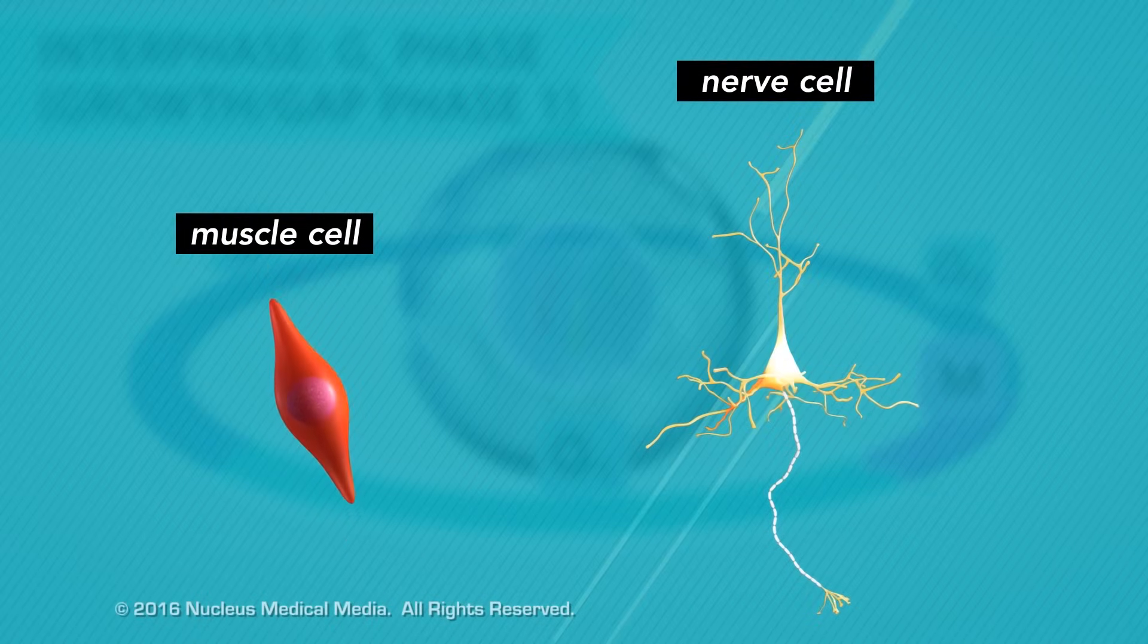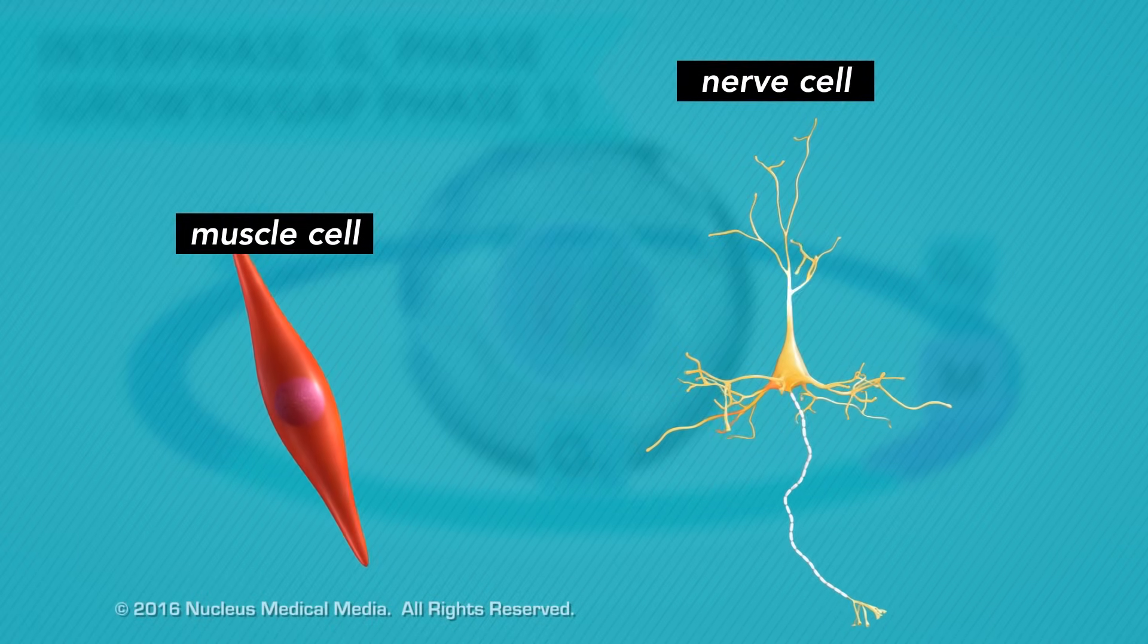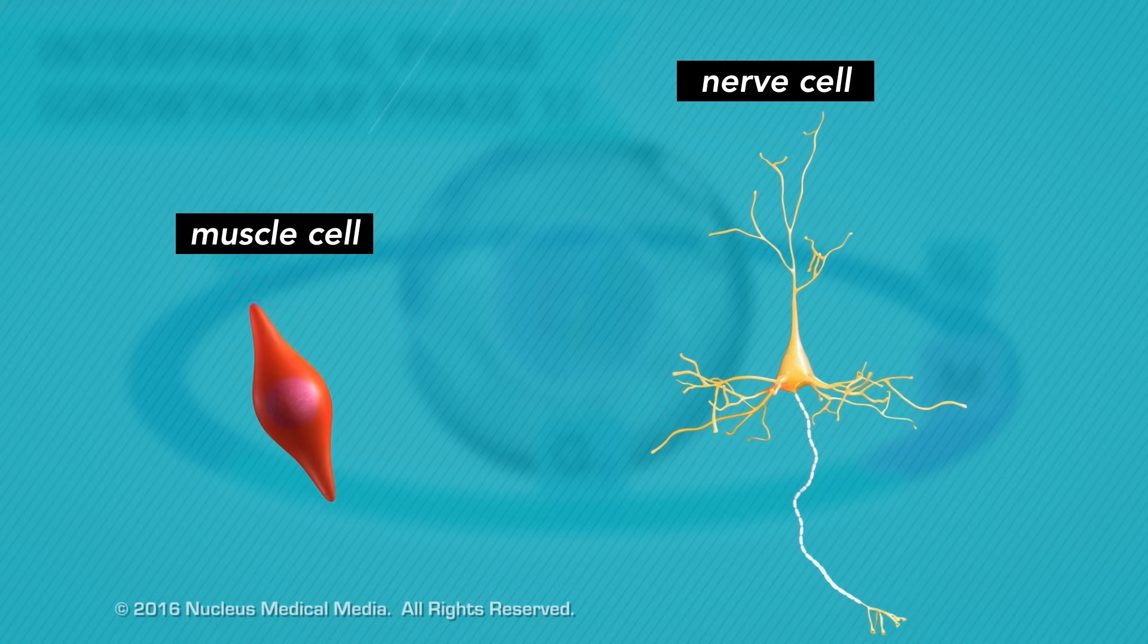Note that some cells, such as muscle and nerve cells, exit the cell cycle after G1 because they do not divide again.